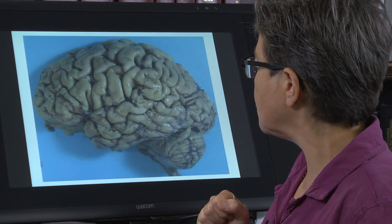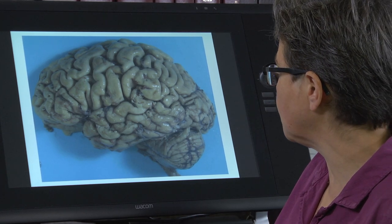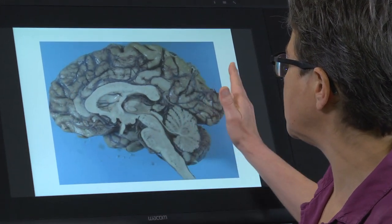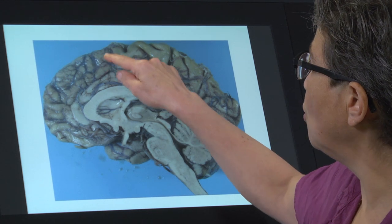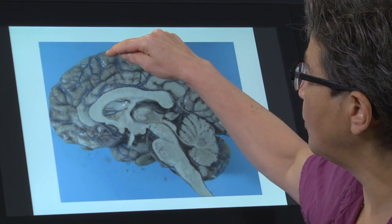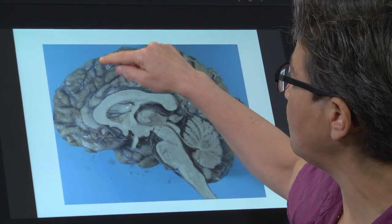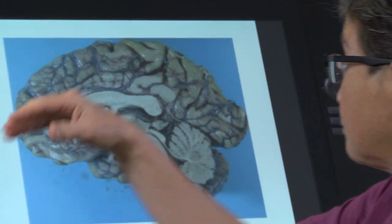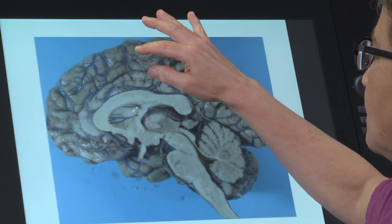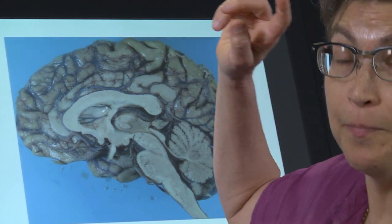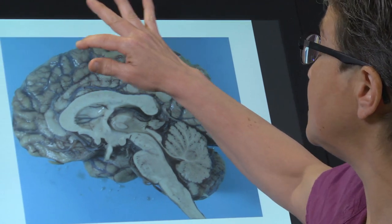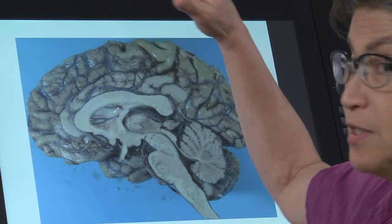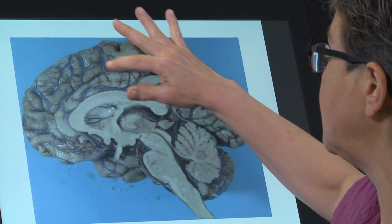Now let's look at the medial surface to find some landmarks. Again, this is the front, this is the back. The motor cortex peaks over the convexity, so the very medial parts of the motor cortex — serving the saddle region, the bum muscles, and the back of the leg muscles — are all contained on this medial surface. Somatosensory cortex for the saddle region and the back of the legs is also on the medial surface.